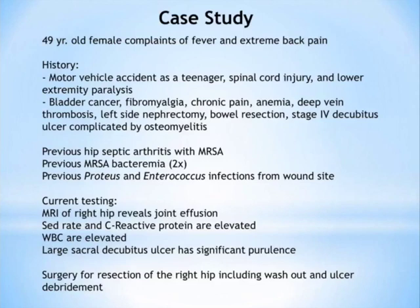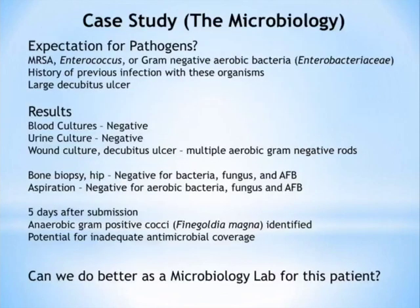Current testing revealed an MRI of the right hip showing joint effusion, elevated sed rate, elevated C-reactive protein, elevated white blood cells — all indicators of infection — and her large sacral decubitus ulcer was showing significant purulence. She had surgery for resection of the right hip including a washout, and ulcer debridement. Given her history, the expected pathogen list was headed by MRSA, and then organisms from the stage 4 decubitus ulcer — enterococcus or gram-negative aerobic bacteria including Enterobacteriaceae.